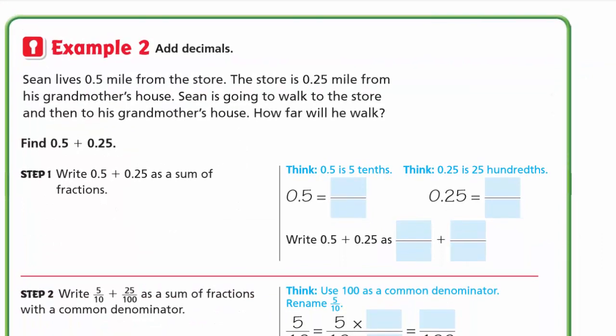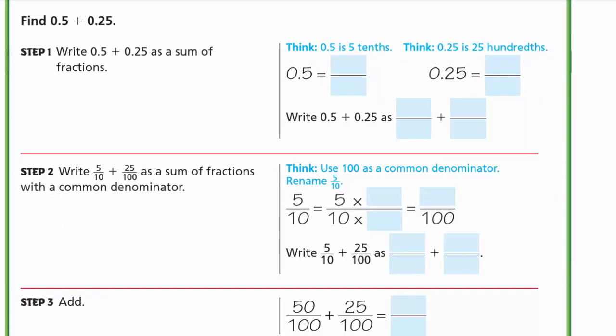Example 2 uses decimals. Sean lives 5 tenths of a mile from the store. The store is 25 hundredths of a mile from his grandmother's house. Sean is going to walk to the store and then to his grandmother's house. How far will he walk? So we need to find 5 tenths plus 25 hundredths, which as fractions is 5 over 10 plus 25 over 100.